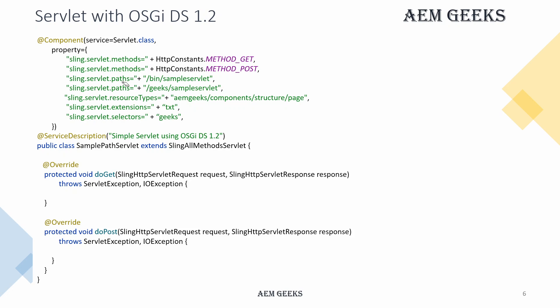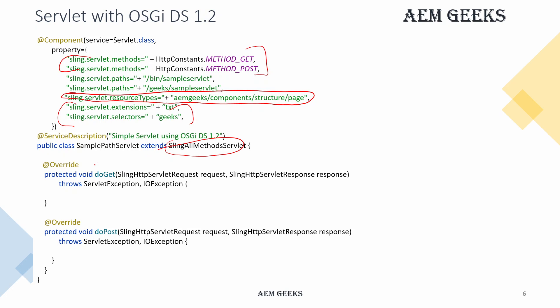When you want to register your servlet with a resource type, the property to add is sling.servlet.resourceType, and inside you give the resource. You can bind your servlet with multiple resources. You can also define what methods it will support, as well as the extension and selectors. Note that methods, extensions, and selectors work only with resource type servlets, not path-bound ones. Then you extend one of the two classes — SlingAllMethodsServlet if you have GET and POST, or SlingSafeMethodsServlet if you have only GET.